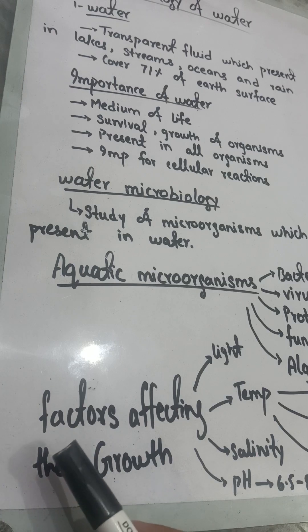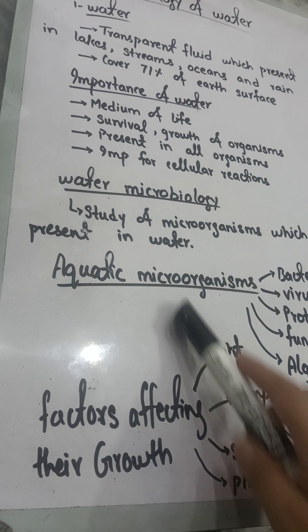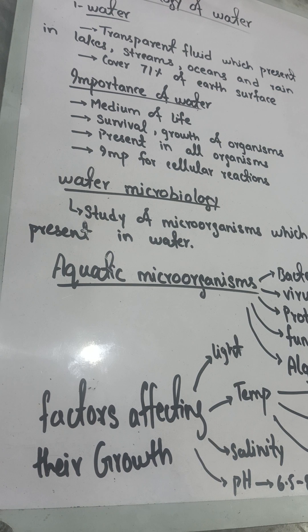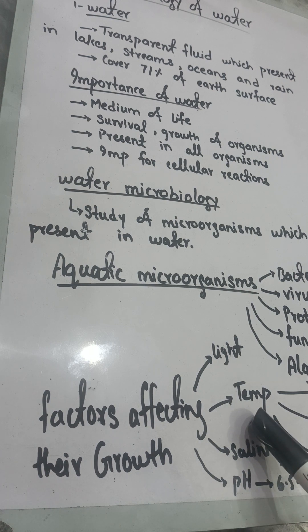Now we will study the factors which can affect the growth of these microorganisms. The first factor is light. Microorganisms need light, directly or indirectly, for photosynthesis. There are many marine plants which make their own food with the help of light, so the availability of light should be at a moderate level in order for them to grow.